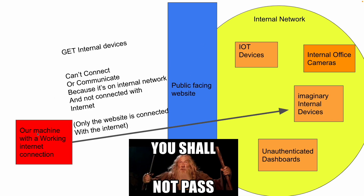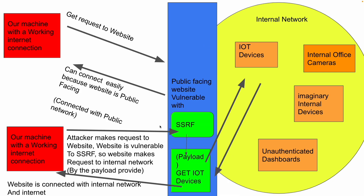As you can see in this slide, when we try to connect directly with the internal network we are stopped, because the internal network is not connected to the internet. But the public-facing website is — it is part of both the internal network and the internet. So we cannot directly make requests to any internal device, but we can hit the website. If a website is vulnerable to SSRF, the attacker can send a payload to trick the website into making requests towards the internal network.